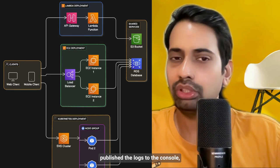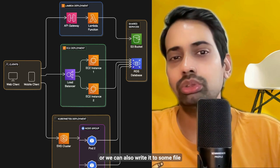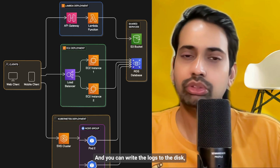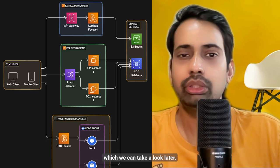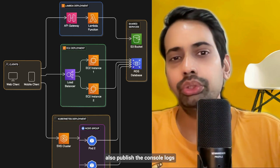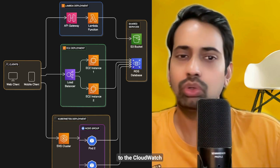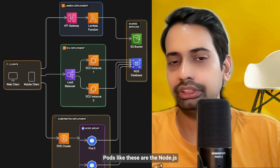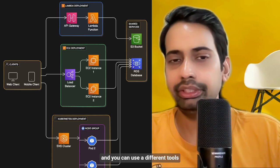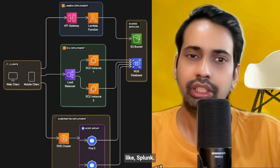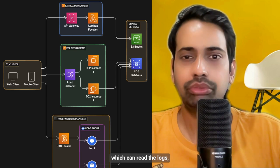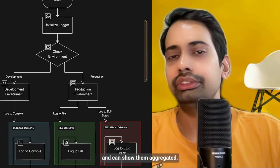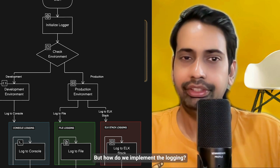Similarly for EC2 instances, there are a couple of options: you can publish logs to the console, or you can also write them to a file since it's an EC2 instance and you can write logs to disk. You can also publish console logs to CloudWatch. For Kubernetes container pods, you can use different tools like Splunk, which can read console-out logs and show them aggregated.